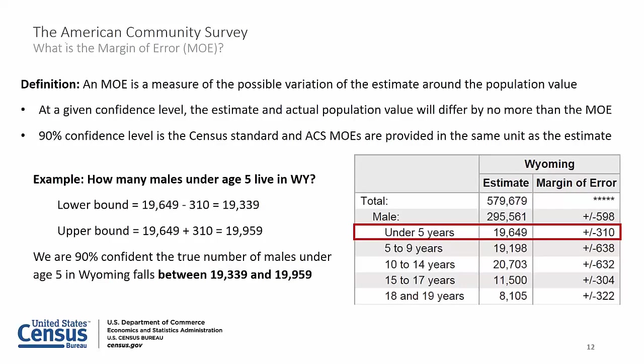I will always include the margins of error or MOEs, because we love it when you use these. MOEs allow data users to be certain that at a given level of confidence, the estimate and the actual population value differ by no more than the value of the MOE. The margin of error is a measure of the possible variation of an estimate around the population value. The Census Bureau uses a 90% confidence level as its standard.